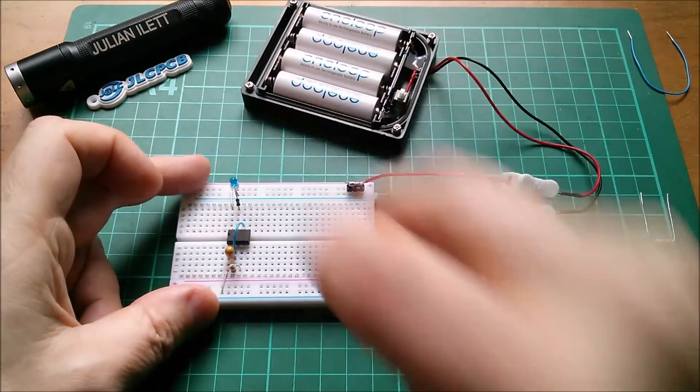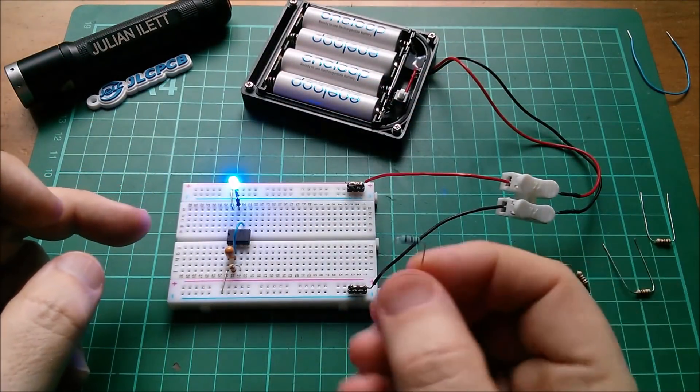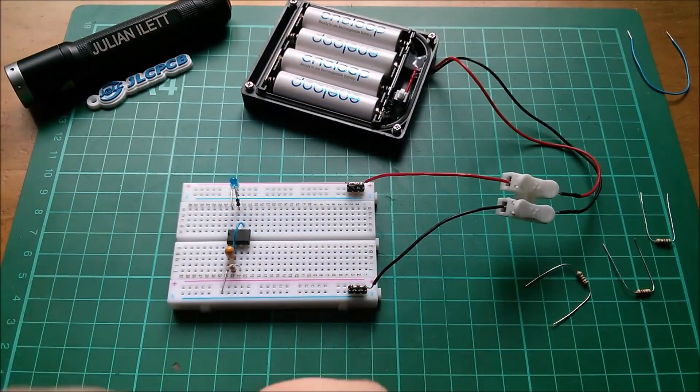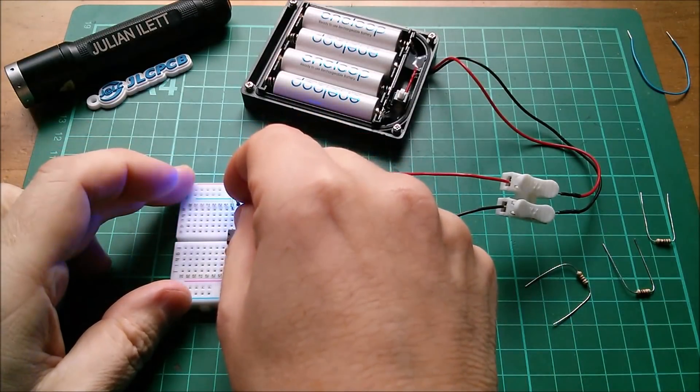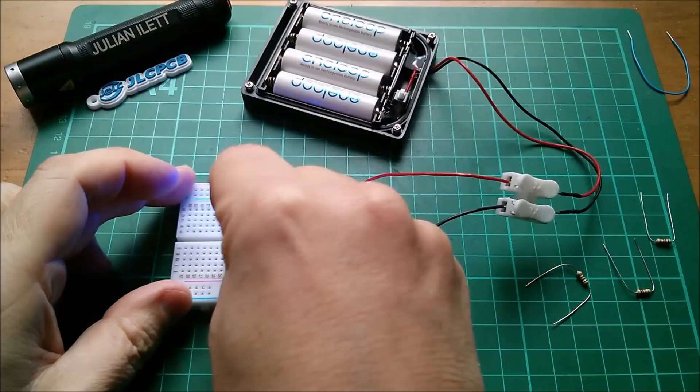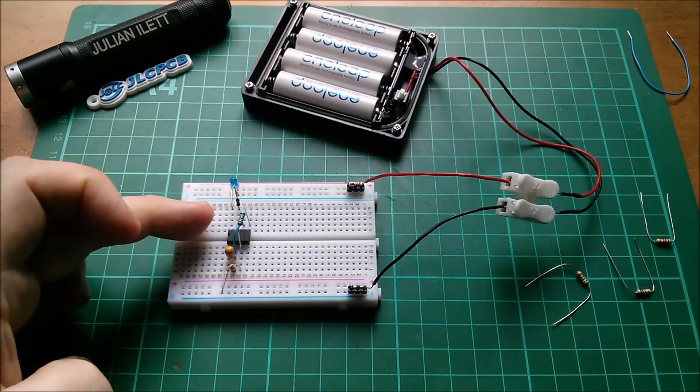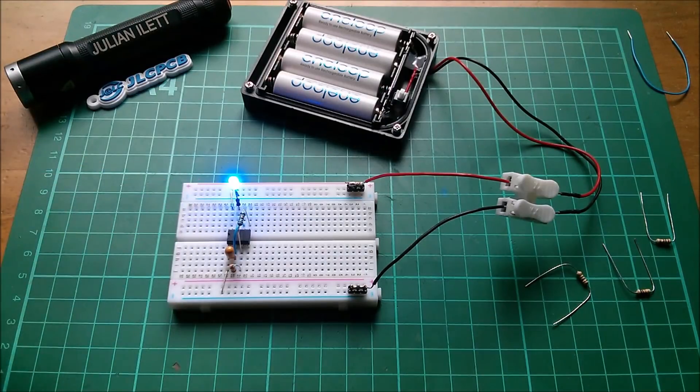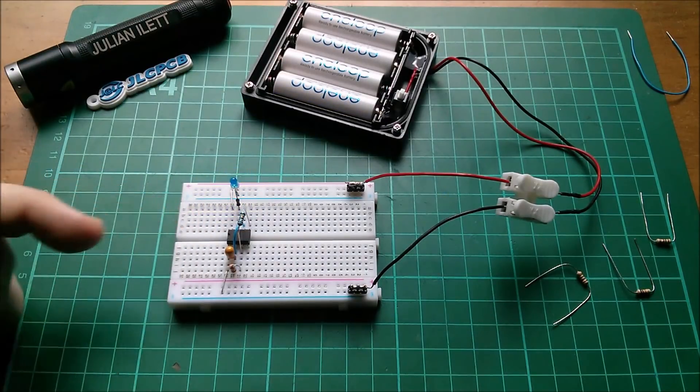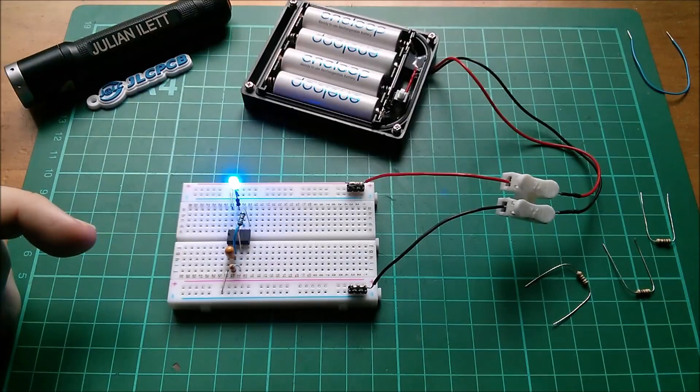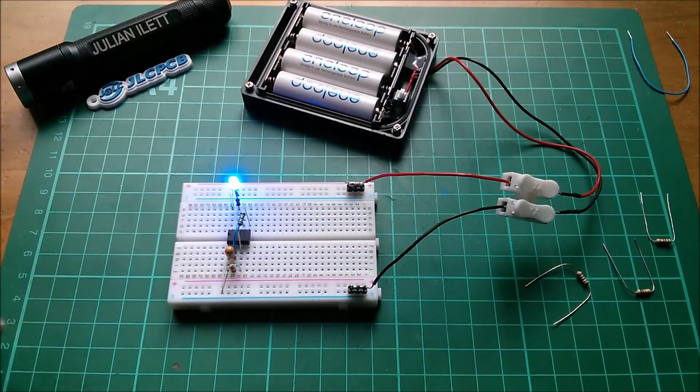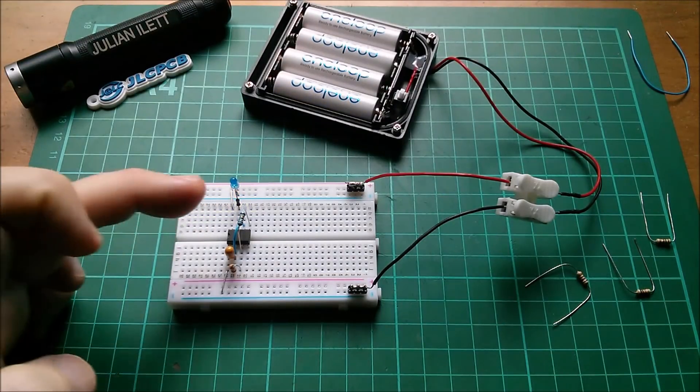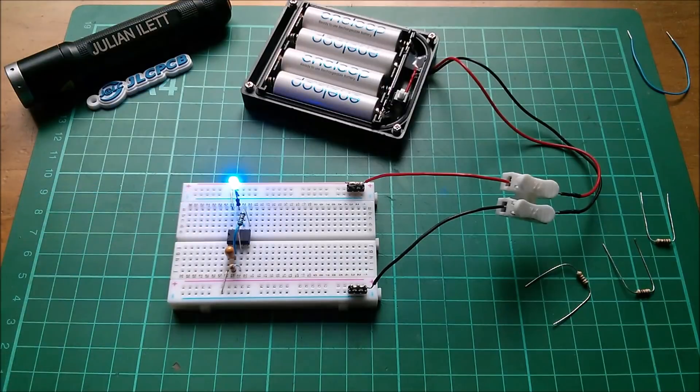So 100 ohms works. And then I thought well let's just go mad and use 10 ohms. Will that work? 10 ohms between the control voltage pin 5 and the output pin, pin 3. And remarkably, and I was quite surprised at this, that still flashes very slowly with just 10 ohms between the control pin and the output pin.